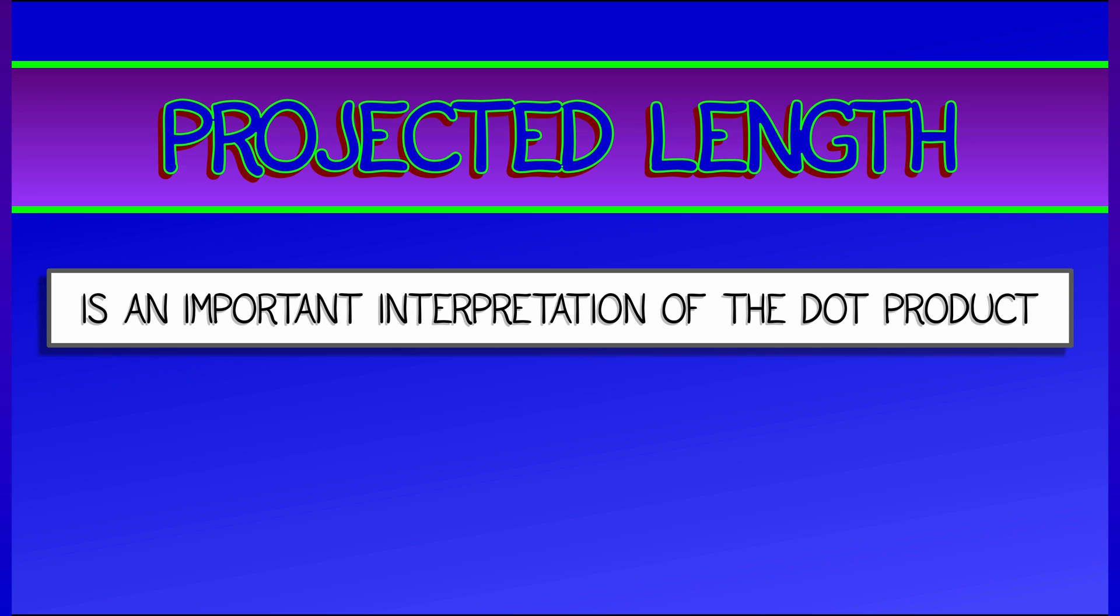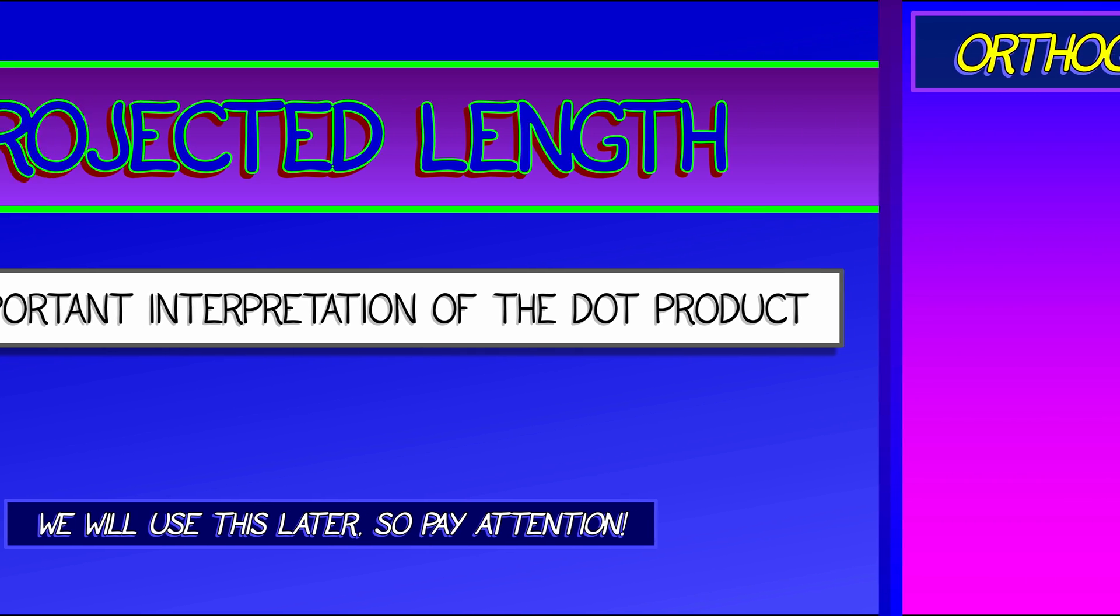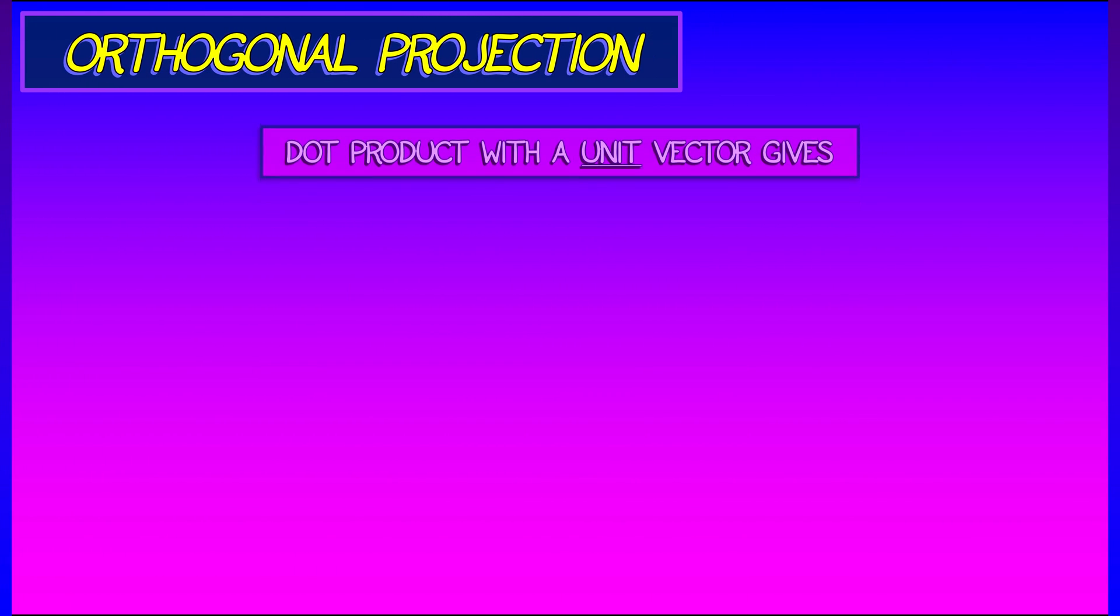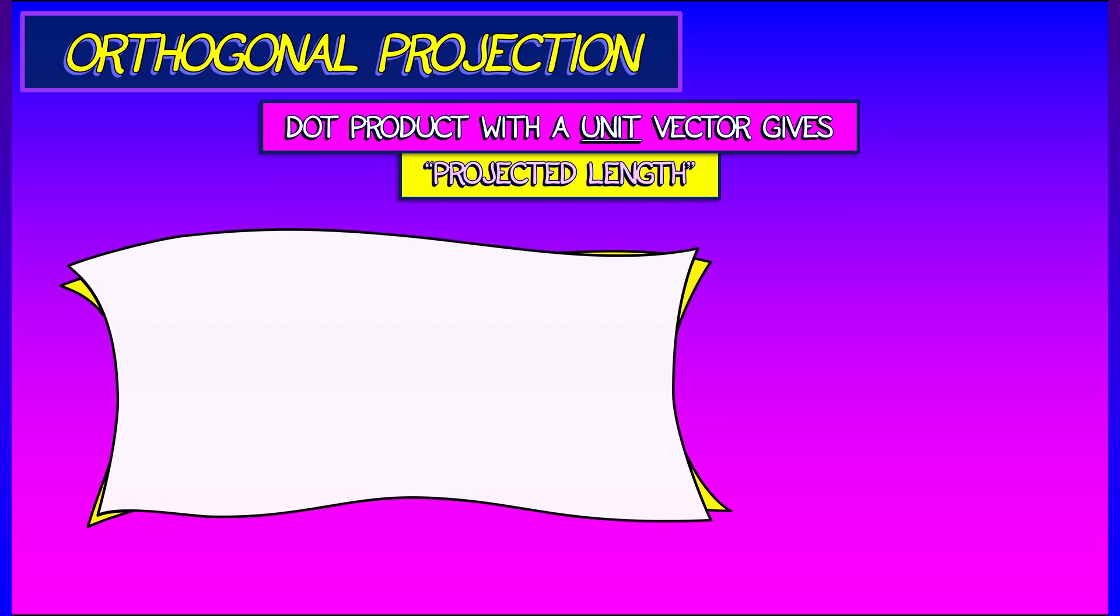Projected length is going to give us one of our most important interpretations of the dot product. So pay attention. We are going to use this a lot. Here's the idea. Dot product with a unit vector gives you a projected length.